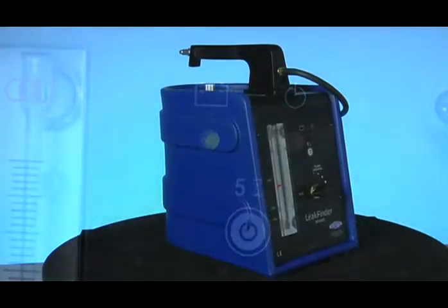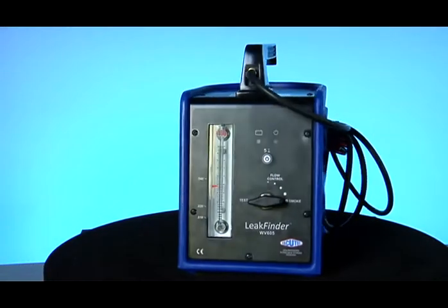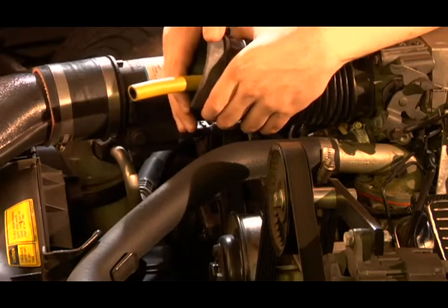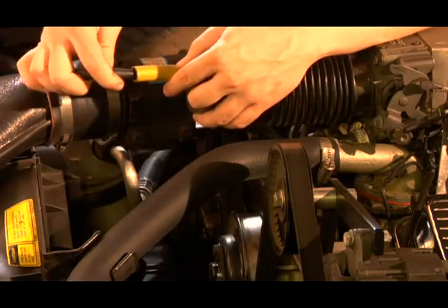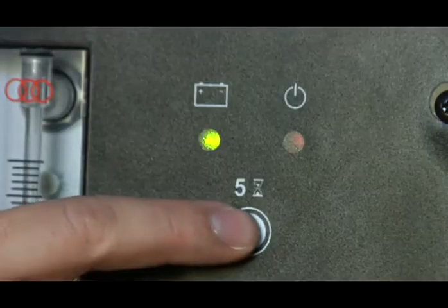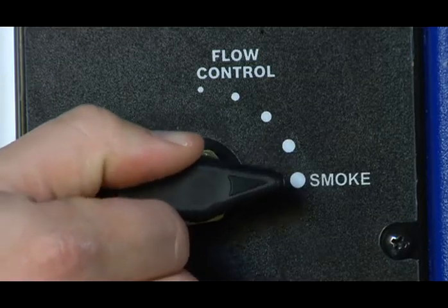Now let's put the leak finder to work and show you how easy it is to find leaks and make money. Use the standard adapter cone to access the intake system, then connect the smoke supply hose to the cone. Press the start button and make sure the flow control is set to full flow.